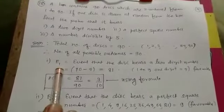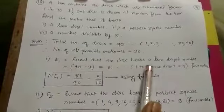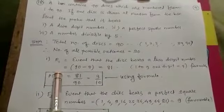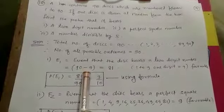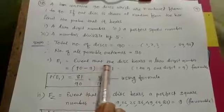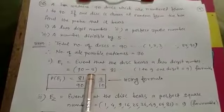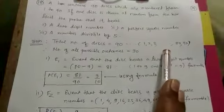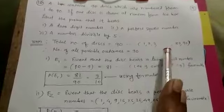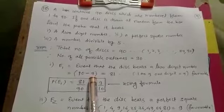Now the first one is E1, which is an event that the disc bears a two-digit number. 90 minus 9 equals 81. You know that the numbering is 1 to 90, so 1 to 9 is already one-digit number. So if you minus them, then the remaining are 2-digit numbers.